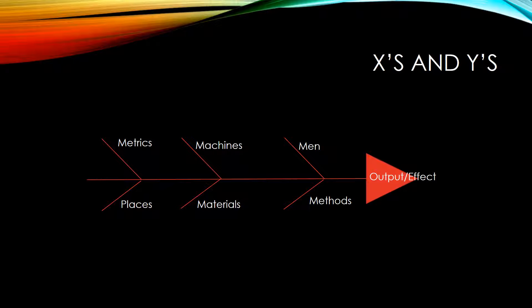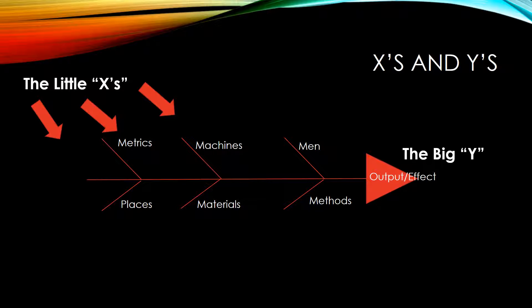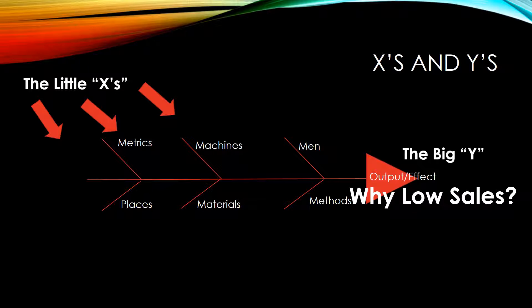Real quick, with the fishbone you're probably familiar — we have at the head of the fish the big Y, the answer to the equation. All the little bones sticking out in these categories are going to be the X's that sort of contribute to that answer when you add them all together. We'll pretend we're working at some type of business where sales are low at the moment, and our project is to determine the root cause of why we have low sales.